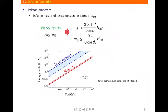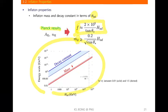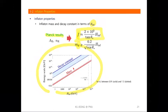The inflaton mass and decay constant can be written in terms of the inflation scale, because there are Planck results constraining them. This figure shows the parameter space consistent with the Planck result — it spans a huge range of mass and decay constant, because in our scenario the ratio between the overall size of the inflaton potential and the constant term can be arbitrarily small.